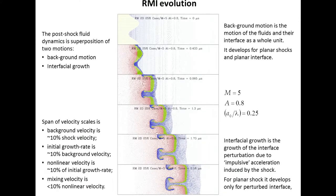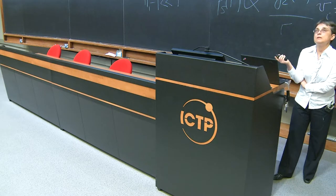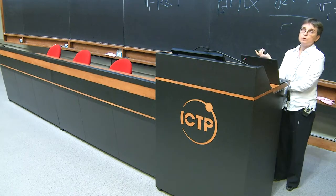The RMI evolution — familiar to many in this audience — shows post-shock dynamics as a superposition of two motions. After the shock passes from light to heavy fluid, both fluids and the interface between them start to move as a whole unit: this is the background motion. Meanwhile, interface growth occurs due to impulsive acceleration from the shock. Looking at the span of scales involved explains why this problem has remained unsolved for 40 to 60 years.